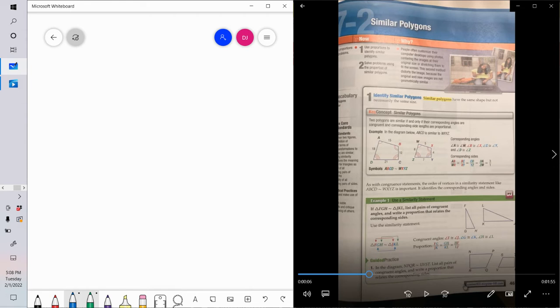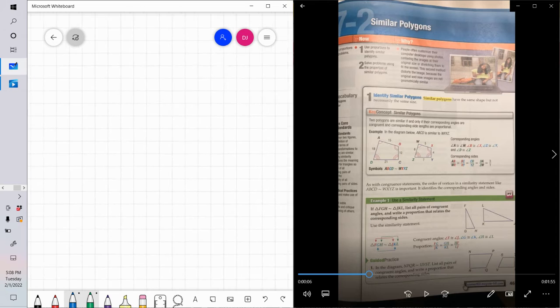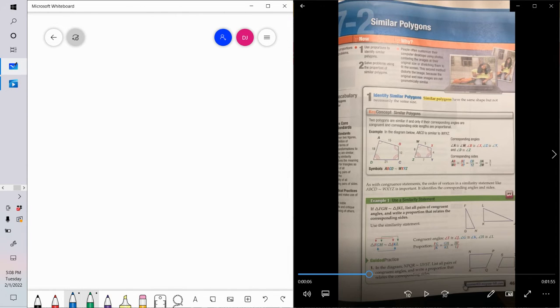In a previous video, we had looked at ratios and proportions, just kind of like generically. So if you need some help with ratios and proportions, please go back and watch that video. What we're going to do is extend that concept into similar polygons. I'm using this textbook at the right here, it's from McGraw-Hill.